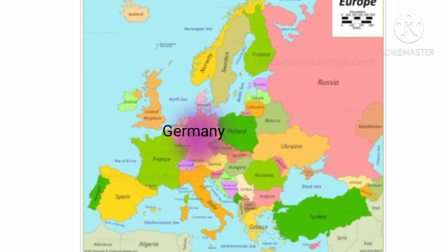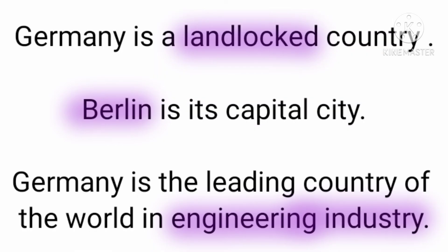Germany is a landlocked country, meaning it is land surrounded by land. Berlin is its capital city. Germany is the leading country of the world in engineering industries.